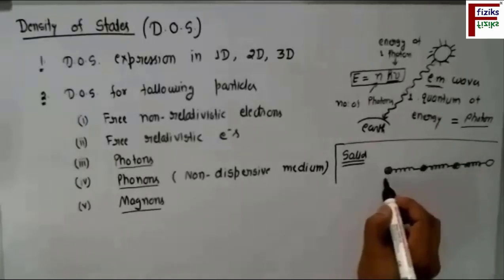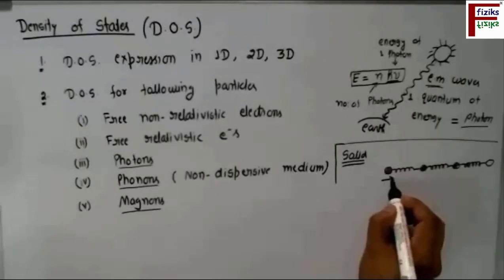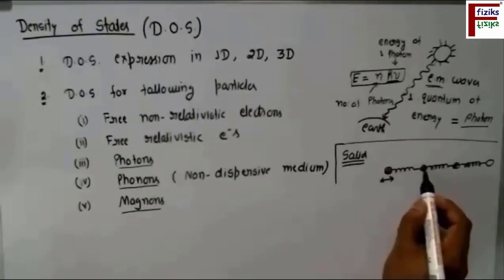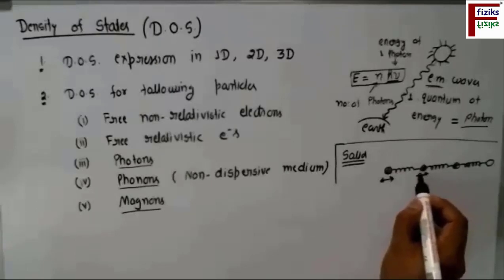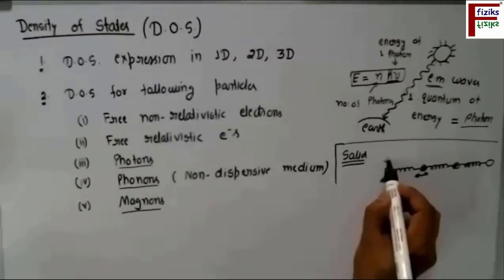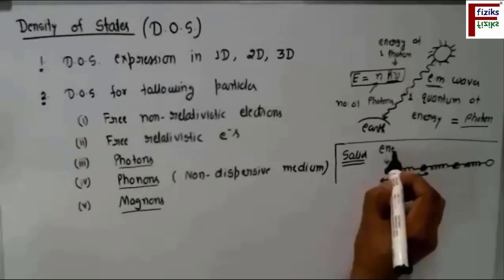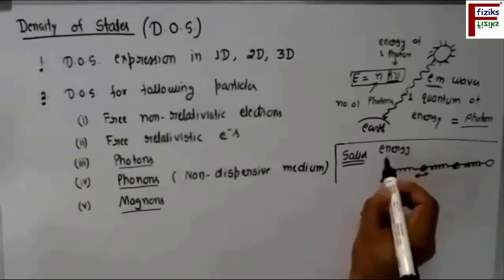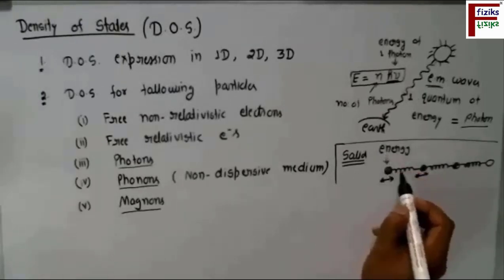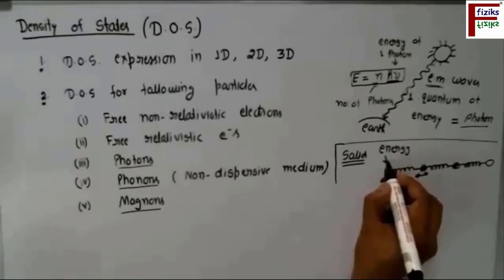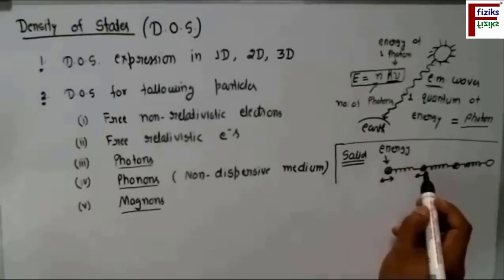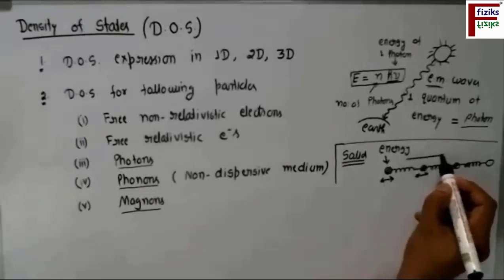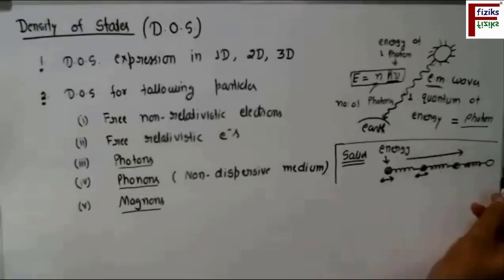And when one atom, because of any reason, if you disturb one atom, then this oscillation is going to also let neighboring atom oscillate. So for example, when you deposit some amount of energy here, because this energy, this atom starts oscillating. And this oscillation transfers to the neighboring atom. And this way, this energy is going to travel in the solid.